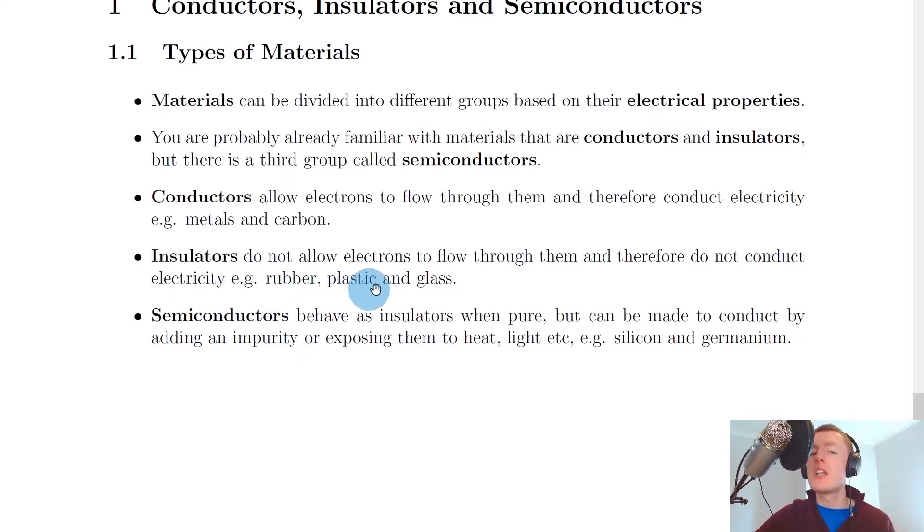whereas insulators do not allow electrons to flow through them and therefore do not conduct electricity. And some good examples of insulators are things like rubber, plastic and glass.